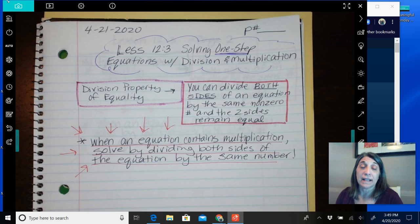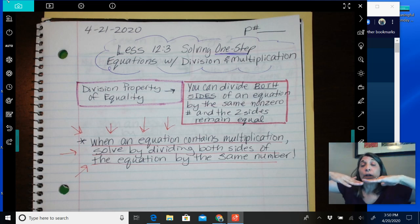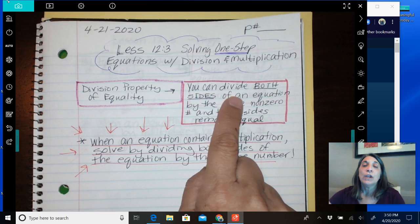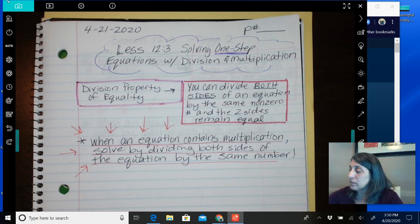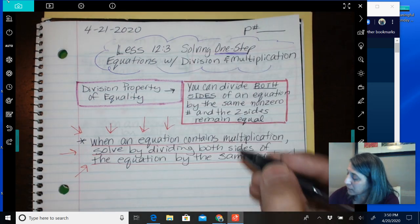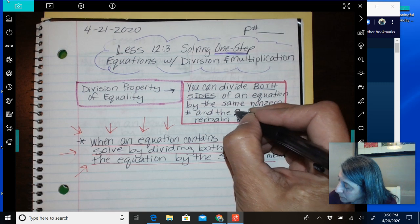So we're learning two more properties. Last week, we talked about the addition property of equality and the subtraction property of equality. And the reason they're called the property of equality is you're either using addition or subtraction to make your equation equal, doing the same thing on both sides. So today we're going to take that same idea. We're going to either use division or multiplication to keep an equation equal or balanced on a scale. We're going to use the same operation on both sides to keep it equal. It's the property of equality. So what the property says is you can divide both sides of an equation by the same non-zero number. You can't use zero. And the two sides remain equal.